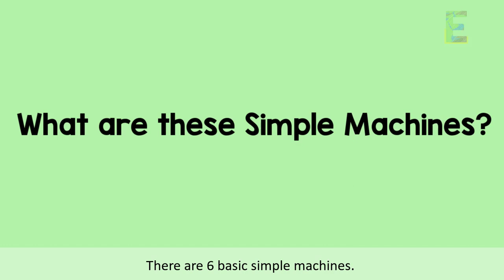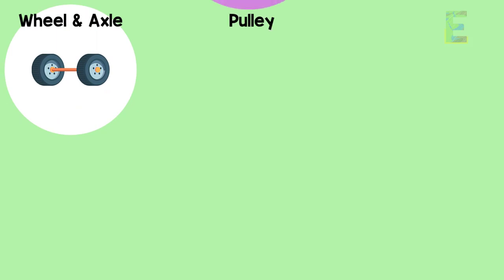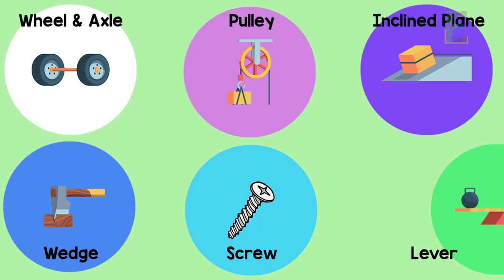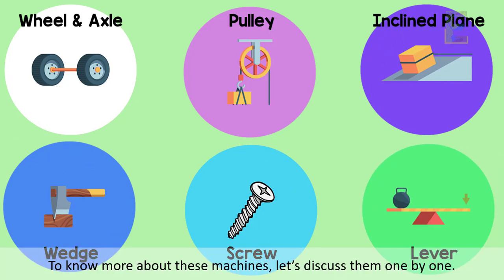What are these simple machines? There are six basic simple machines: wheel and axle, pulley, inclined plane, wedge, screw, and lever. To know more about these machines, let's discuss them one by one.